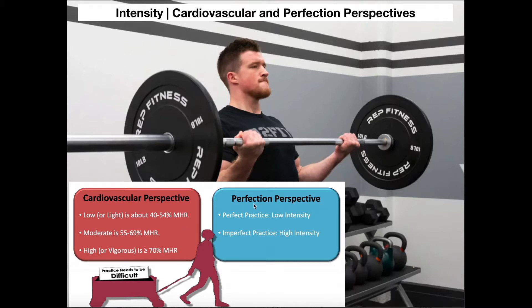We can also use what's called the perfection perspective. This just has to do with whether the person is making errors or not. In perfect practice, the person is really not making errors, and so this would be considered low intensity. Whereas imperfect practice means the person is making errors, and that would be considered high intensity.